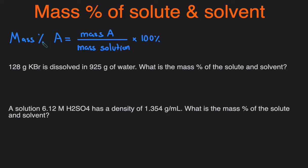The equation to calculate the mass percent is: mass percent of A — where A could be the solute or solvent — equals the mass of that divided by the mass of the solution times 100%. The solution is the total mass of the solute plus the solvent. So if you're solving for the mass percent of the solute, it'll be mass of solute divided by mass of solution times 100%, and for the solvent, it'll be mass of solvent divided by mass of solution times 100%. This will make a lot more sense when we take a look at these two examples.